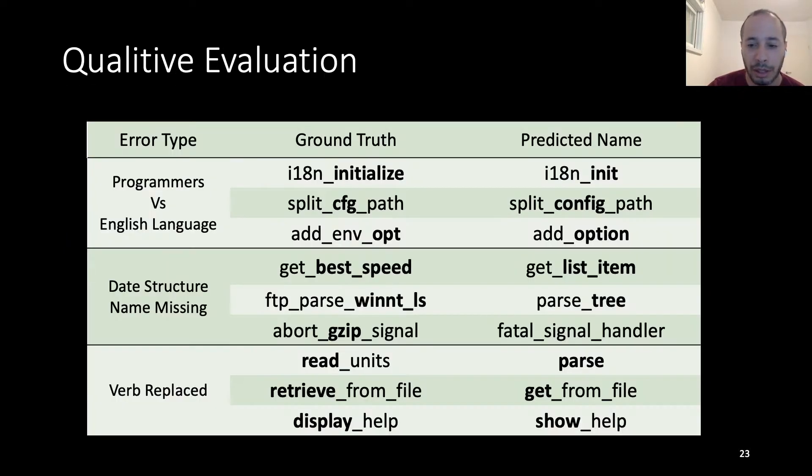After we had finished our test, we wanted to perform qualitative evaluation and examine cases in which our module performed partial predictions. We tally the errors, and we noticed three major groups of errors. The first one we dubbed programmers versus the English language. In essence, programmers tend to use shorthands, which causes these mixed predictions. In this case, the ground truth was a non-shorthand full term initialized, but because our module saw in the training phase the init shorthand many times, it has predicted that one instead.